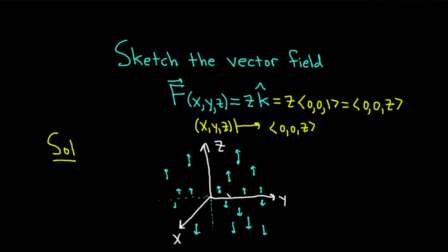So again, down here close to, for small values of positive z, you get smaller vectors. For bigger values of positive z, you get longer vectors.